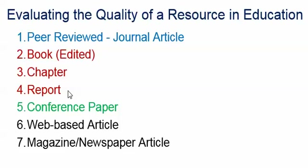The nice thing about an edited book is you get a variety of people giving their opinions, research, and perspectives on a particular topic. It does depend on the nature of the book and the kind of publisher it is. Like MIT Press — that's probably academic. If you don't know some publishers, look at the end of the chapters to see the list of references. In good edited books, you would see hundreds of references, and that's a pretty good sign.